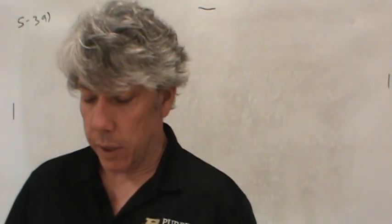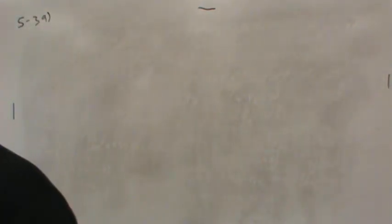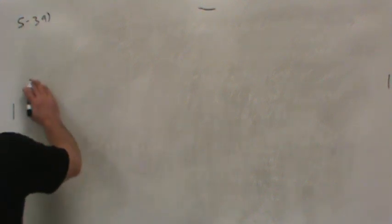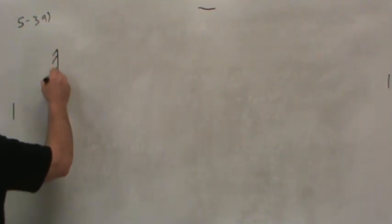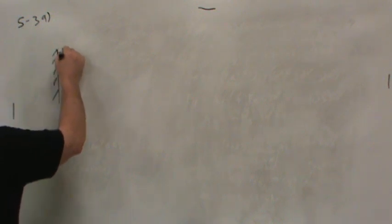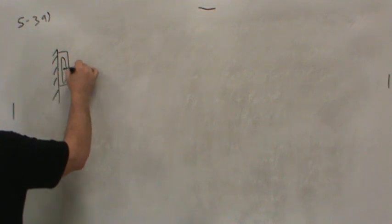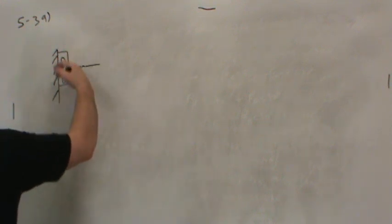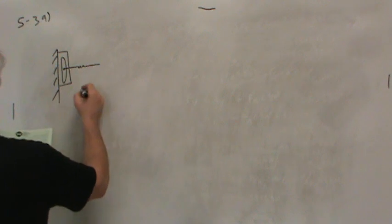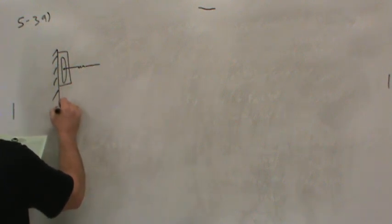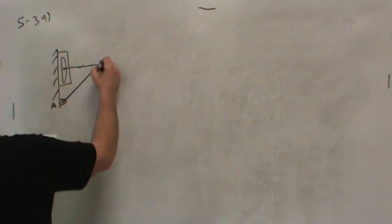determine the smallest angle theta for equilibrium and the horizontal and vertical components of reaction at pin A. Pin A is the pivot point at the bottom of this pivoting body. The body has a pin in slot up here, and that's long enough so that a spring can move up and down in the slot, so the spring is always horizontal.